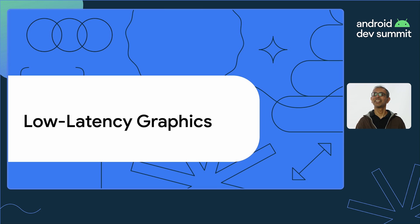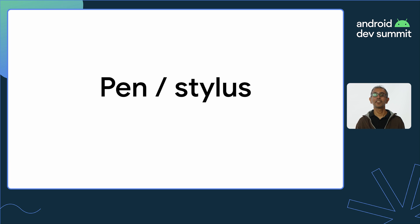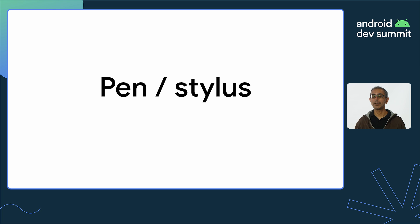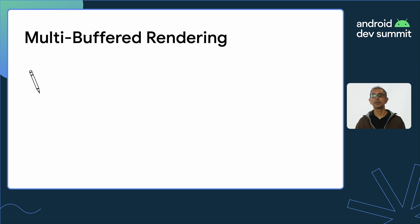Let's talk about low-latency graphics. When you're using a pen or stylus with your Android device, you might notice that as you draw a stroke, the rendering of pixels sometimes lags behind where your stylus is on the screen. The reason this happens is because Android utilizes multi-buffered rendering.